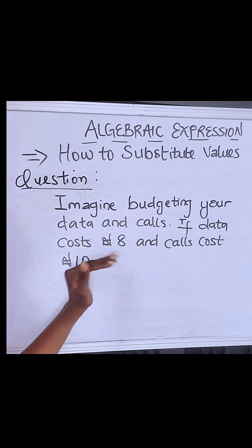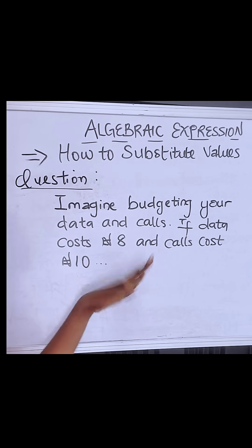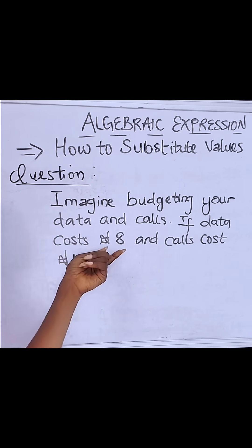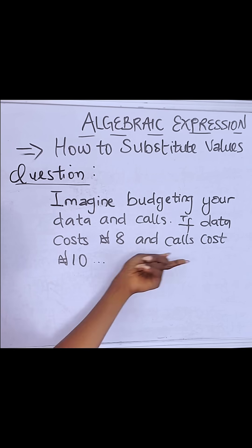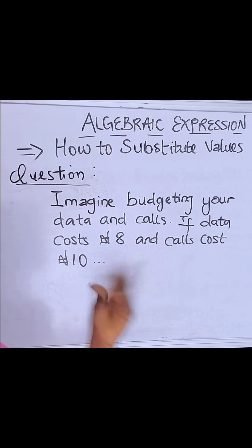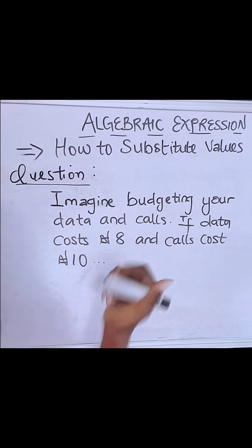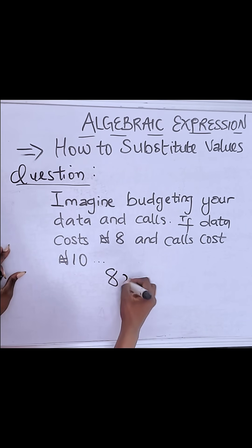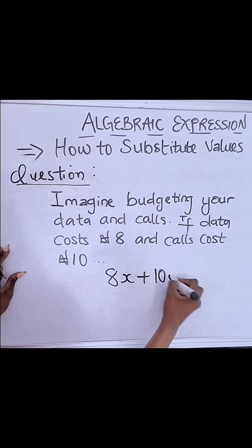Imagine budgeting your data and calls. Let's say for a month it costs you 8 Naira to buy your data subscription and then it costs you 10 Naira to make calls. How do you write this expression out? You could say 8x plus 10y.